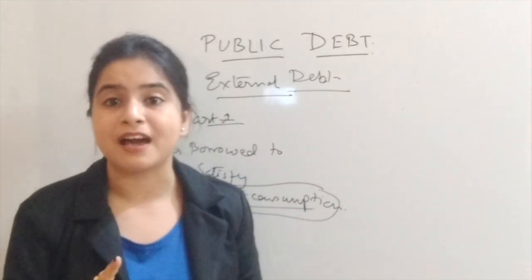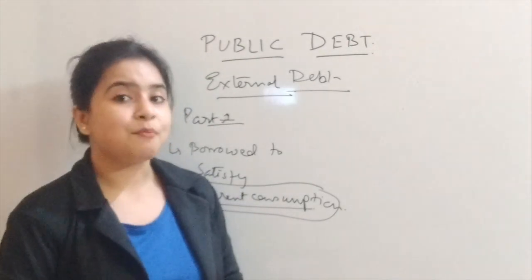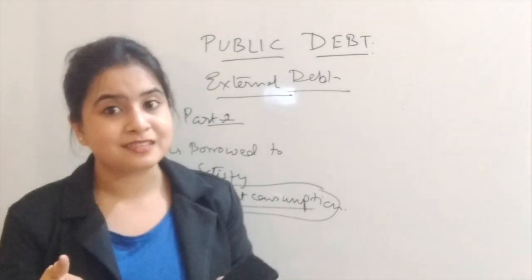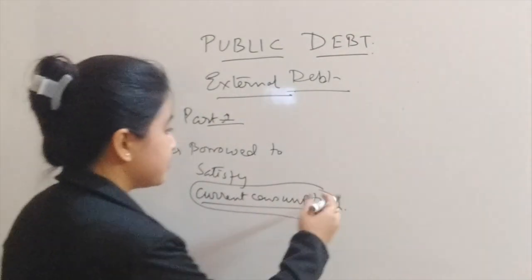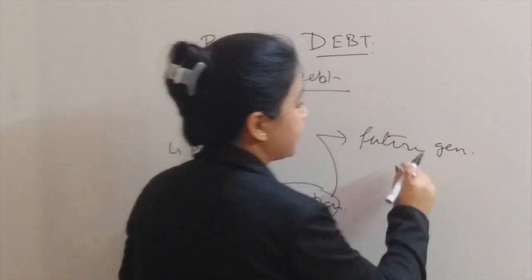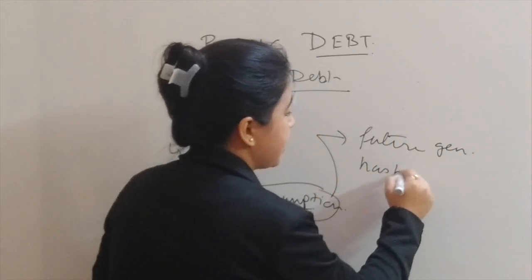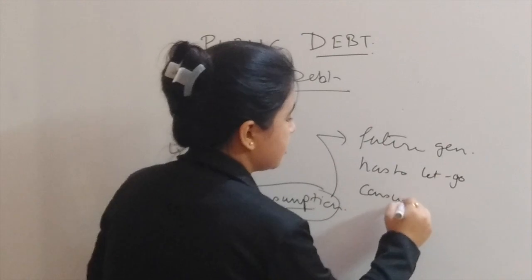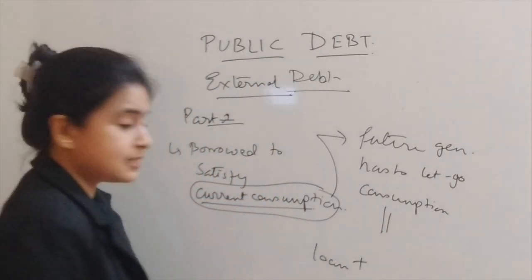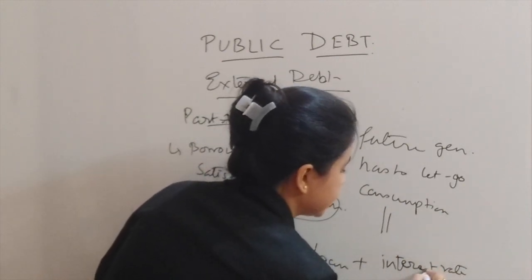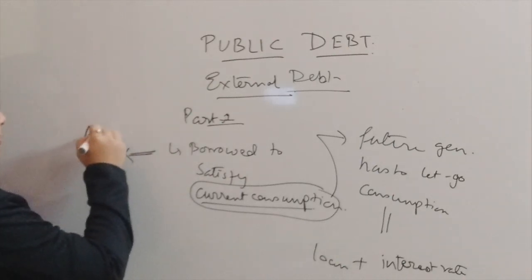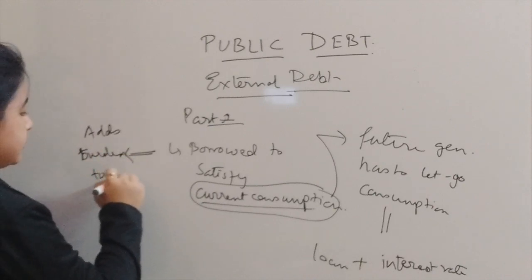The future generation will have to sacrifice a certain amount of their consumption, and that amount will be equal to the loan the government has taken plus the incurred interest that must be paid to the foreign lenders. So the future generation has to let go of consumption equal to the loan amount plus the interest rate payable to foreign lenders. This adds a burden to the future generation.